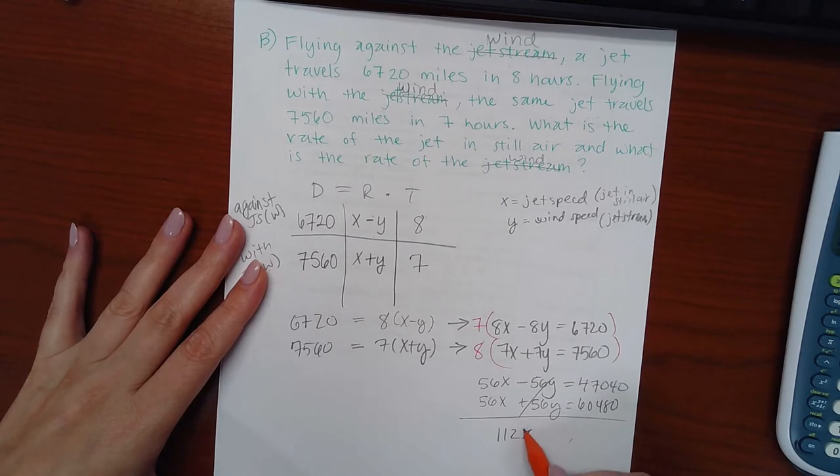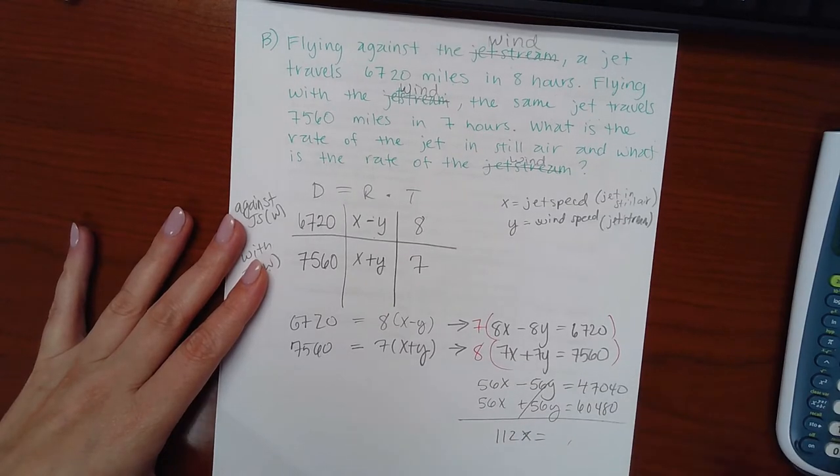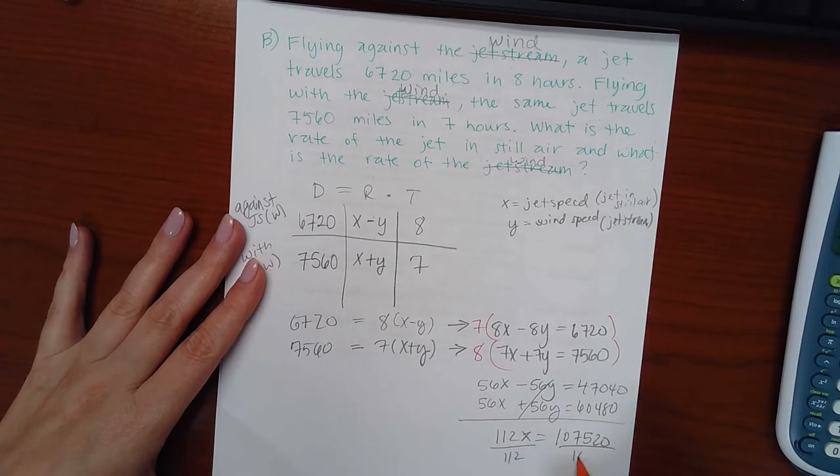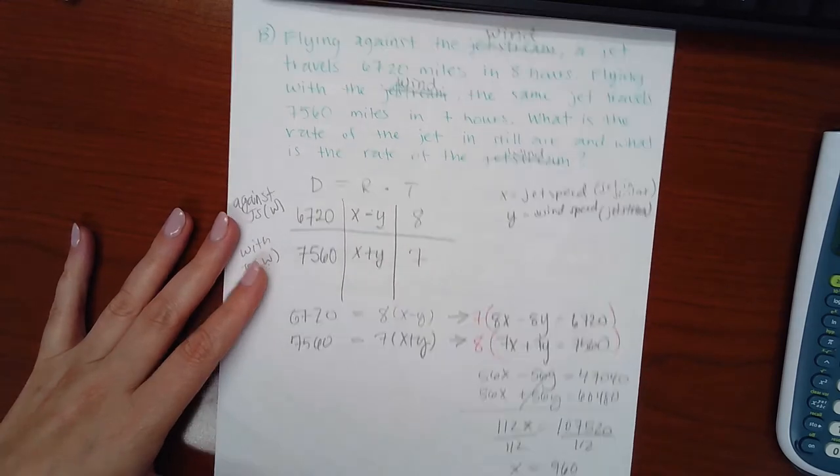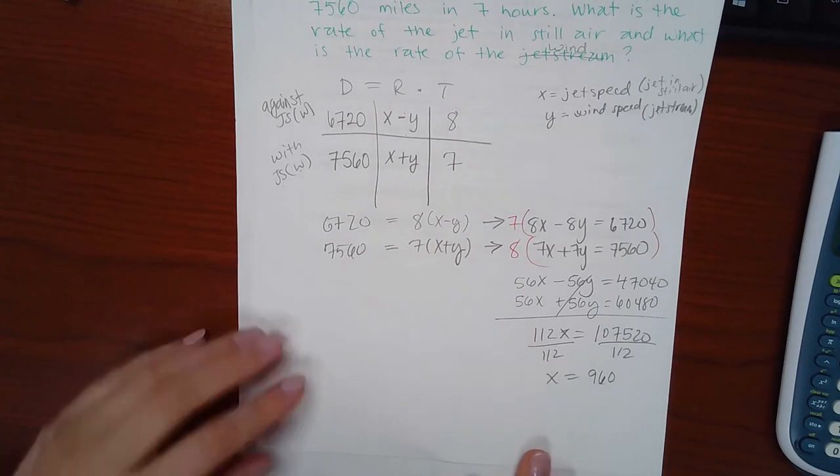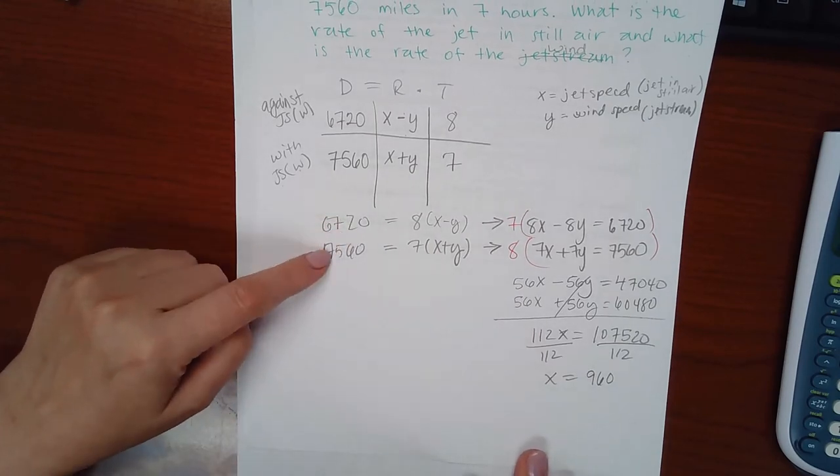And then if I divide by 112 to solve for X, we get 960. So that's X, 960. I can plug it into either one of these equations.